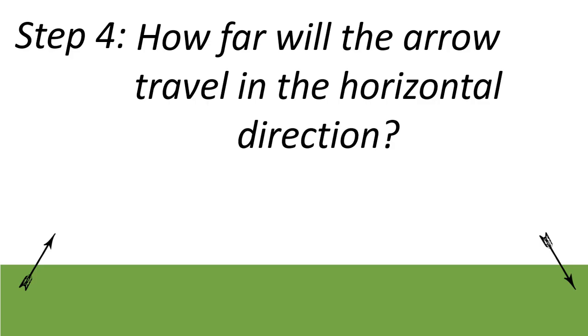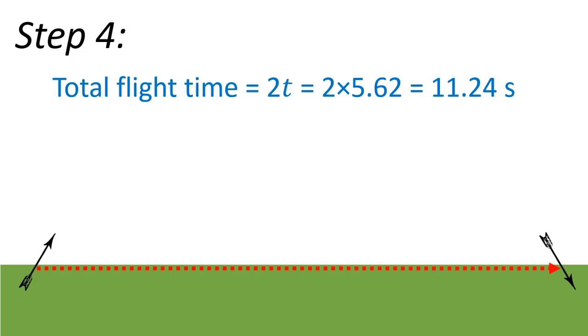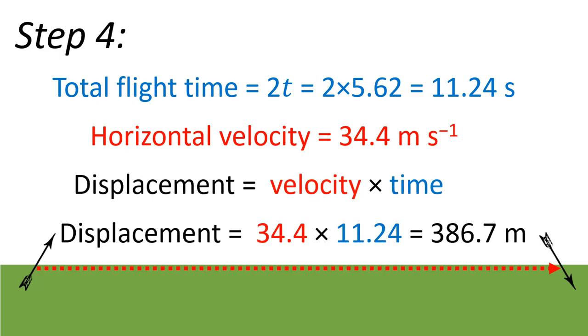Now we're ready to answer the question that we were posed originally. How far will the arrow travel in the horizontal direction? The total flight time, the total time it will be in the air, will be 2t - that's 5.62 seconds to get to its highest point and another 5.62 seconds to get down. So the arrow will be in flight for a total of 11.24 seconds. The horizontal velocity we worked out in step one is 34.4 meters per second. Displacement equals velocity times time, so if we multiply those together we get the answer: 386.7 meters.